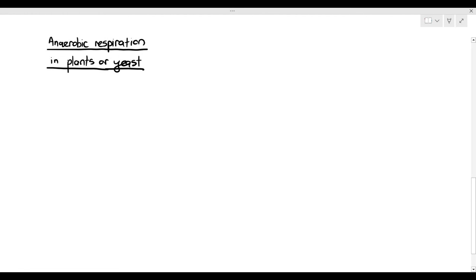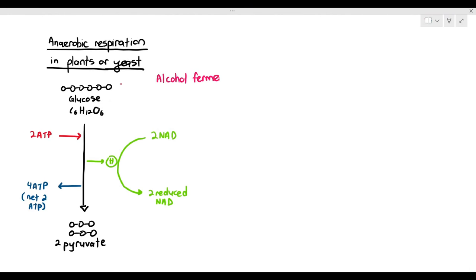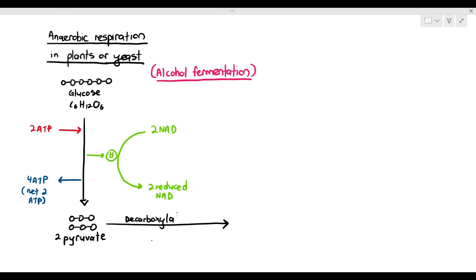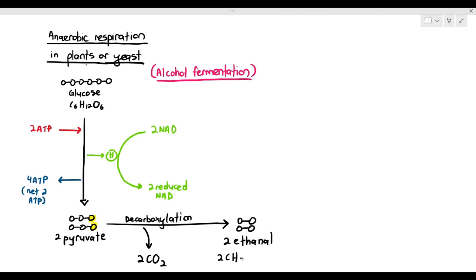We also looked at anaerobic respiration in plants and yeast, where the pathway is slightly different — it undergoes a process known as alcohol fermentation. It still undergoes glycolysis first: glucose is broken down into two pyruvate molecules, producing four ATP and two reduced NADs. But here it's slightly different: each pyruvate — a three-carbon molecule — undergoes decarboxylation, removing one carbon. That's when you get two carbon dioxide molecules. This forms a molecule known as ethanal, which is a two-carbon molecule: CH3CHO.